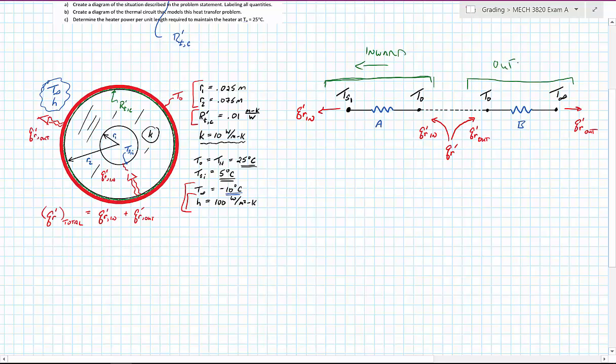So Q_R is a source term that's in the middle of my circuit, and I have energy, as being shown here, moving in two directions.